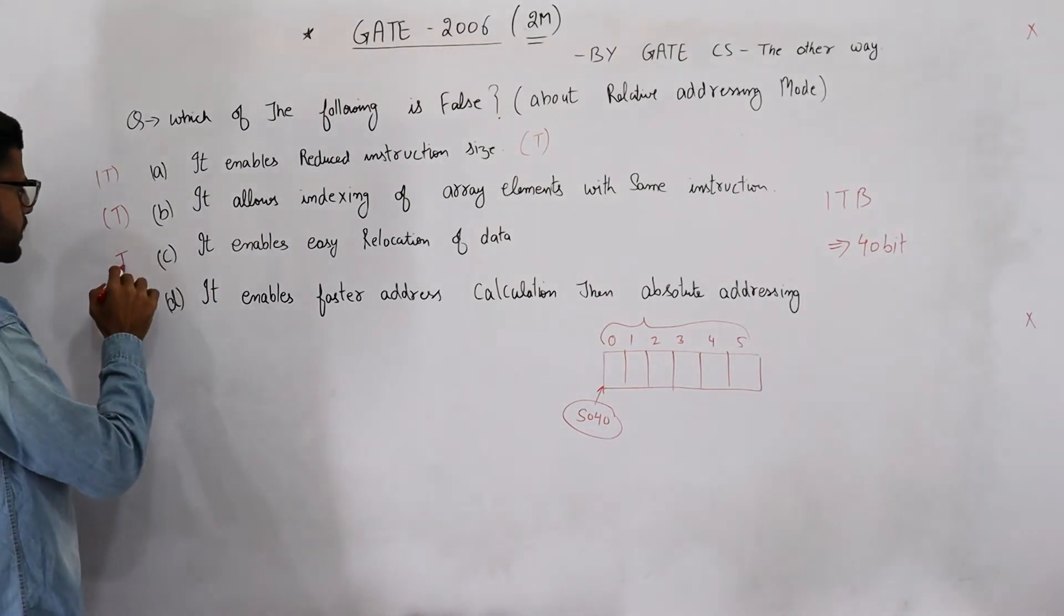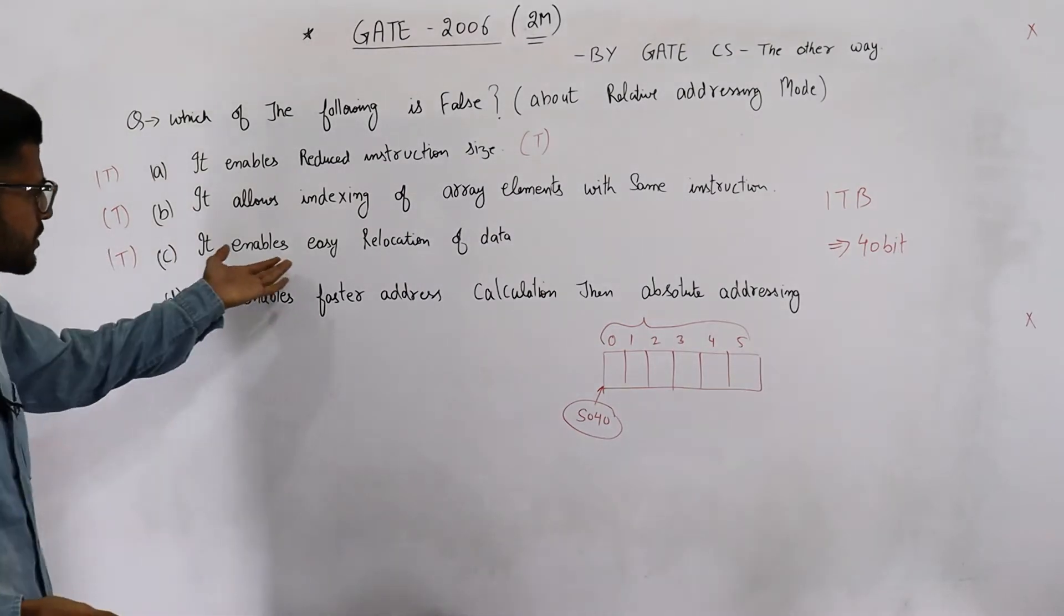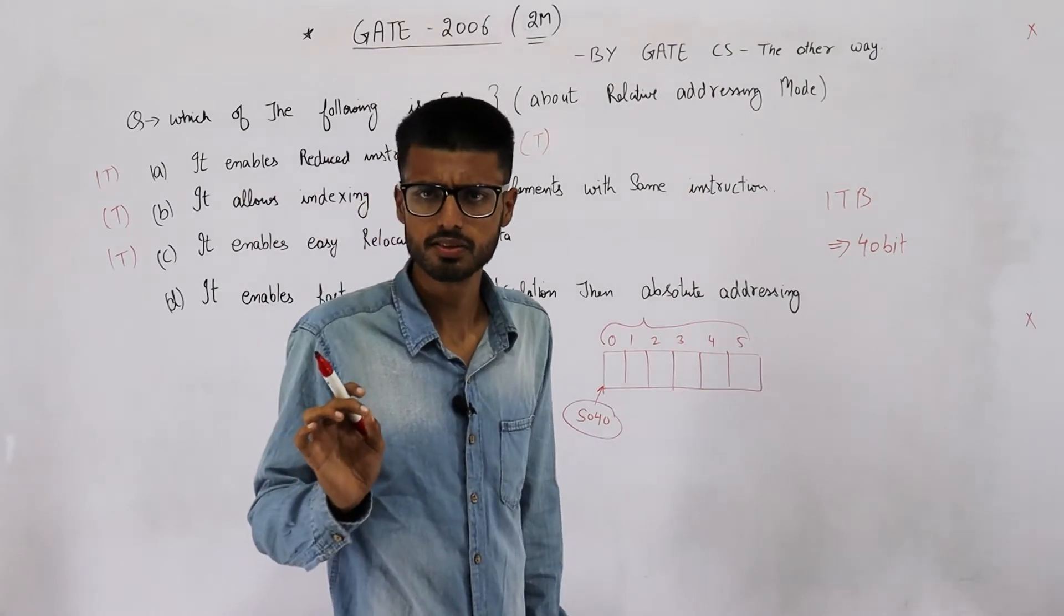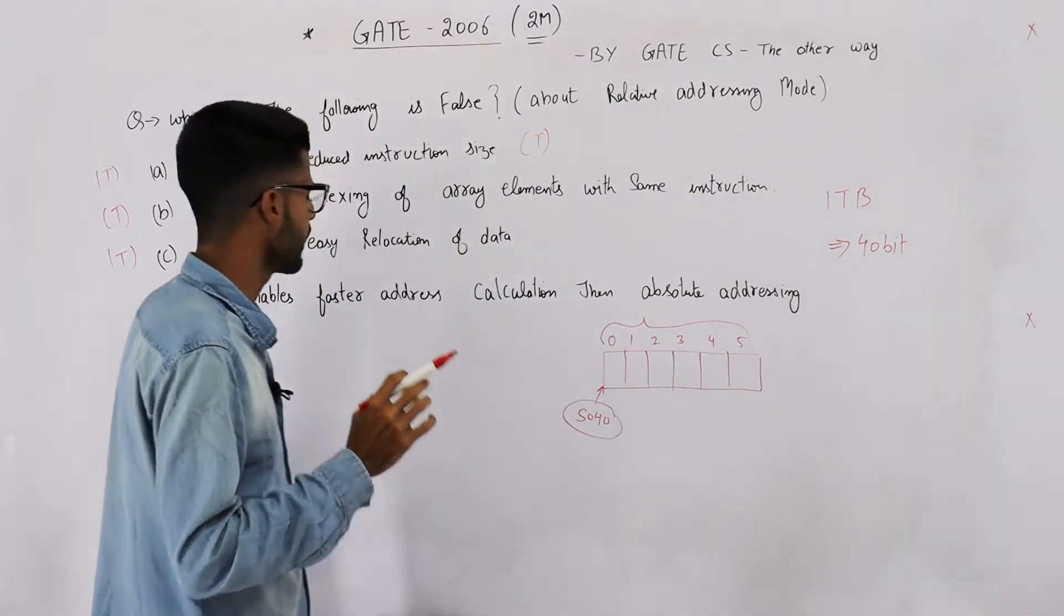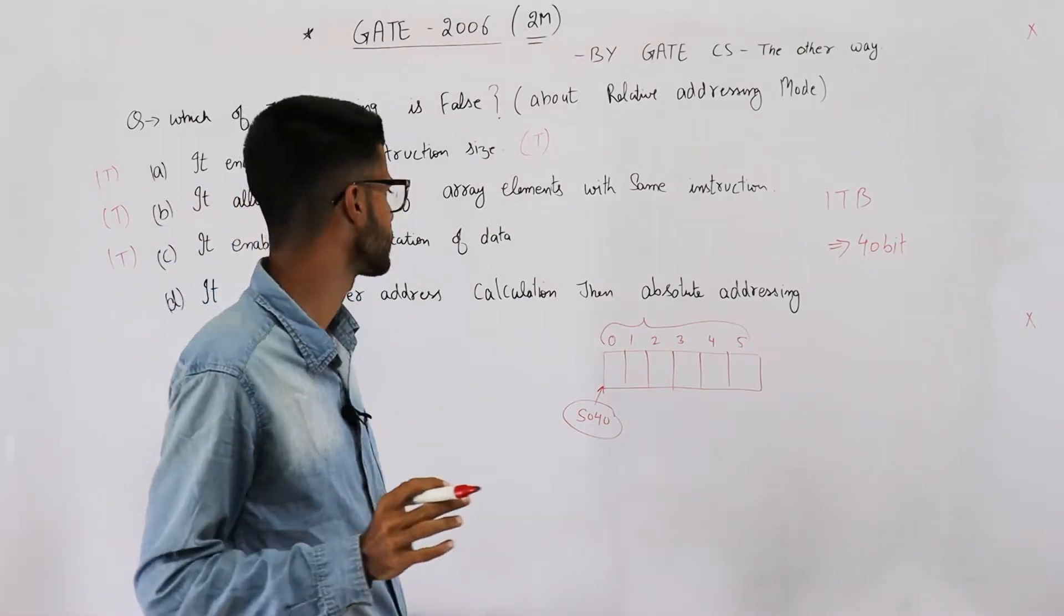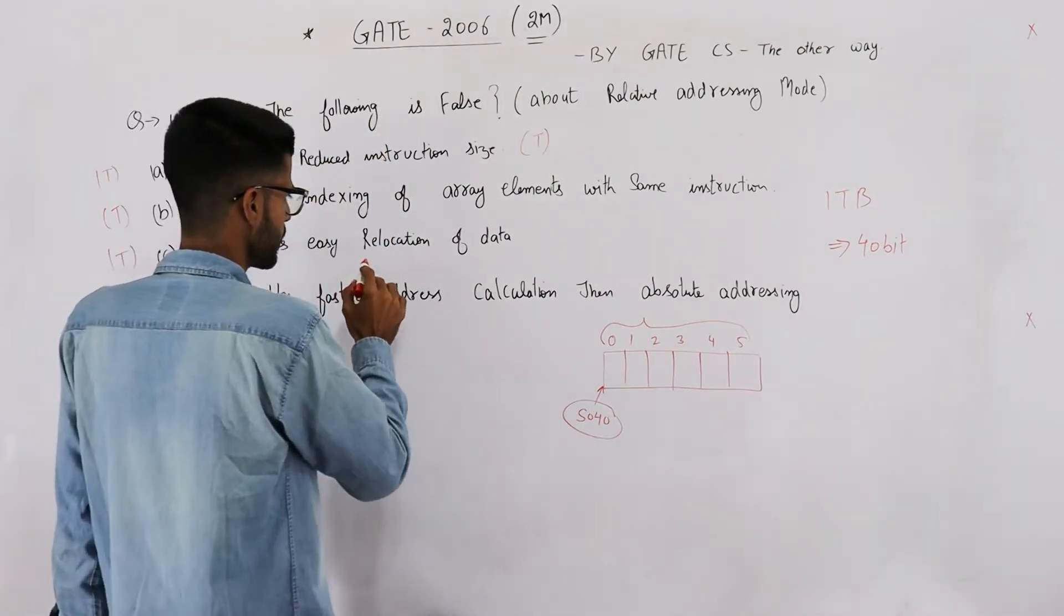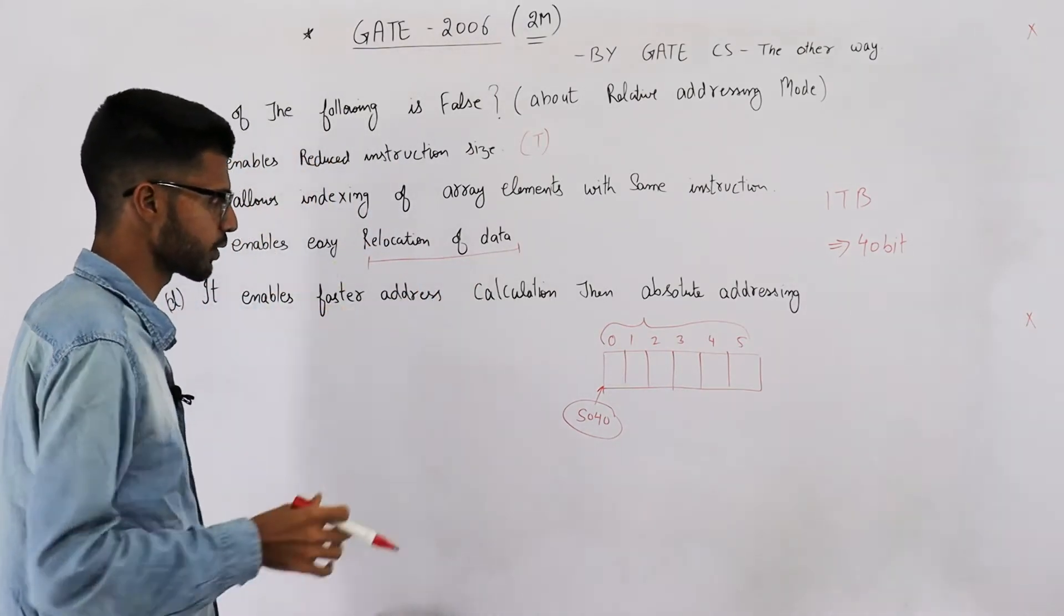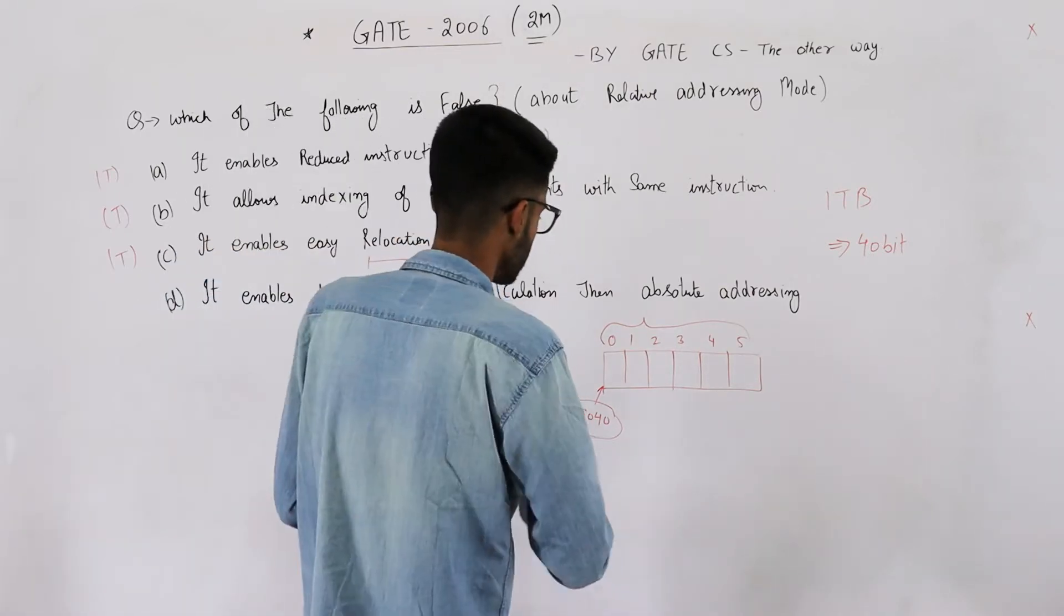It enables easy relocation of data. Yeah, that's true. That's where we use relative addressing because you can save the base address of a program in a register, and relative to that base address you can specify each and every address. So that way, relocation becomes easy. I'll explain in a bit more detail.